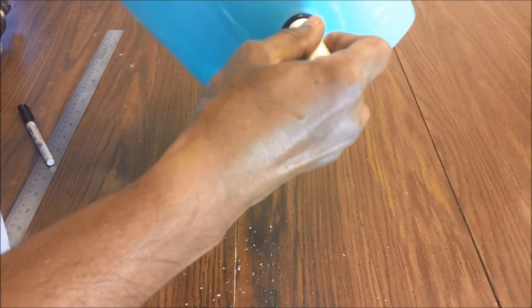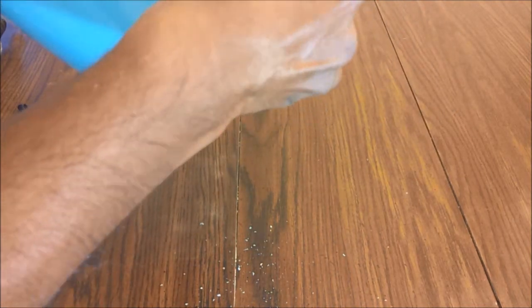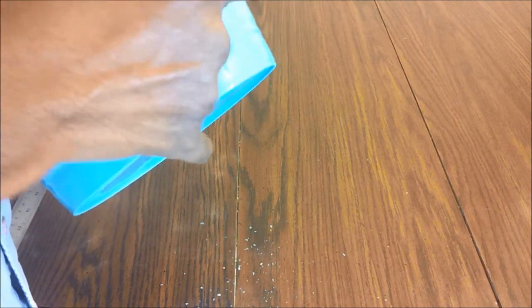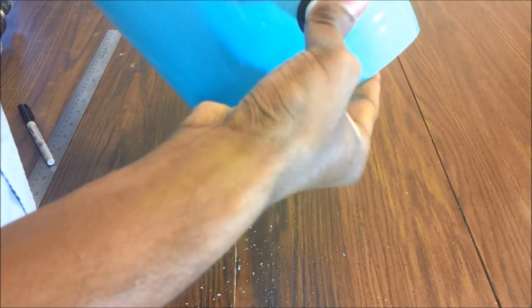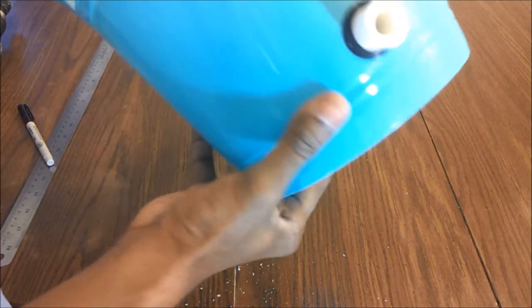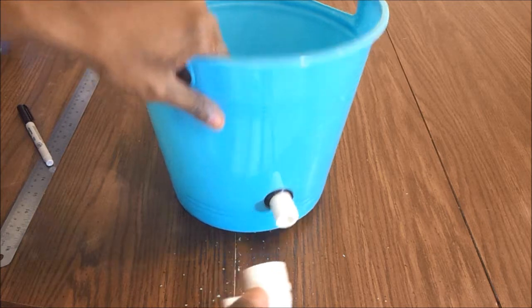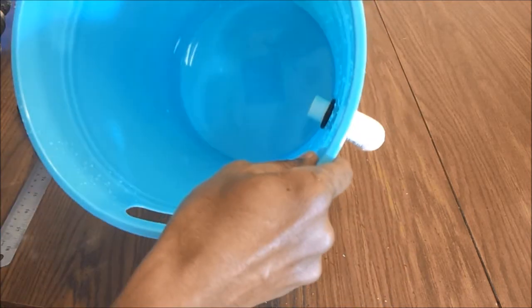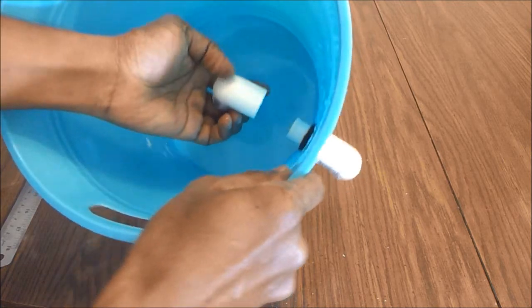Now the PVC pipe is being passed through the grommet. Two elbows are placed on either side of the grommet so the excess nutrient solution drains out of the pail.